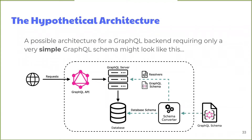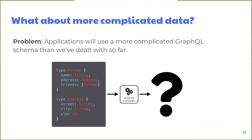We could now envision a hypothetical architecture requiring only a simple schema as an input. The GraphQL schema would be provided to the schema converter, which would generate a database schema, create the database, and generate the necessary resolvers to initialize the GraphQL server. The GraphQL server would then produce the GraphQL API to receive and respond to requests from front-end applications. However, when we started experimenting with more complicated schemas, the difficulty in creating the database schema and resolver functions increased dramatically — requiring multiple tables, foreign keys, and constraints, not to mention sophisticated resolver functions. Although theoretically possible, we thought now would be a good time to take a step back and consider alternatives.